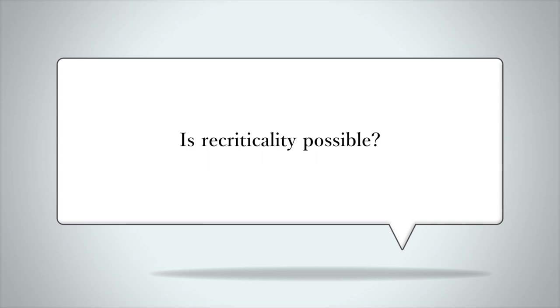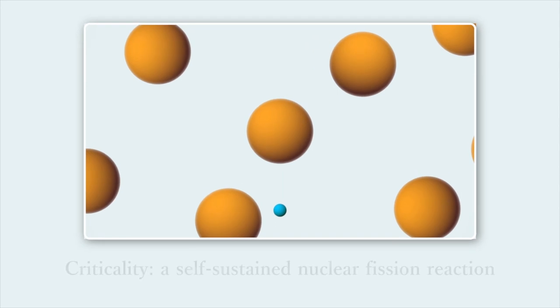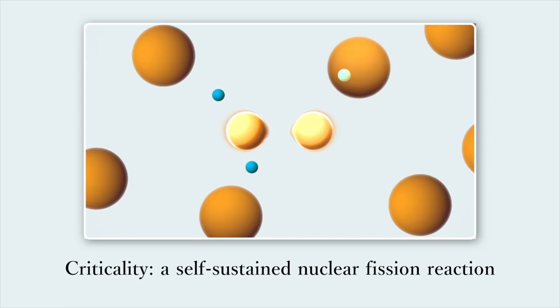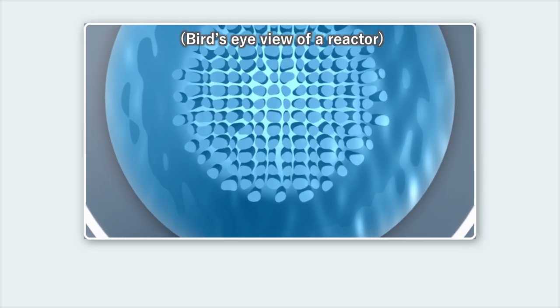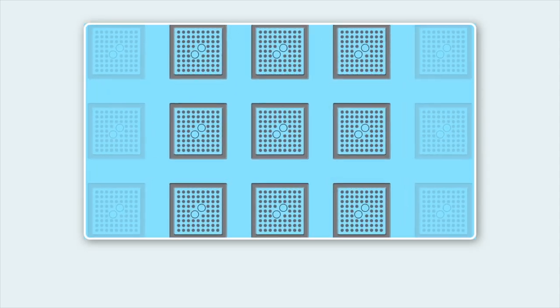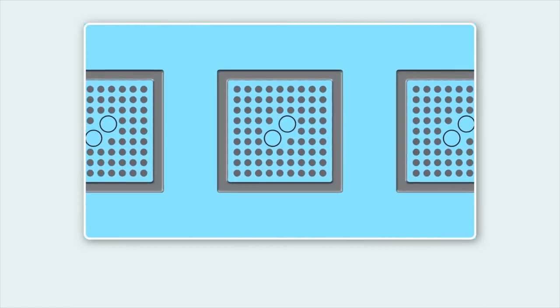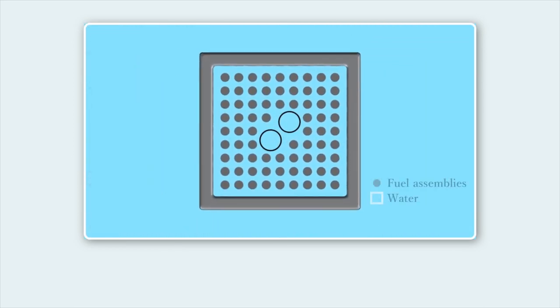Is there any possibility of recriticality occurring from the current fuel debris? First of all, criticality is defined as a condition where a nuclear fission reaction becomes self-sustaining. To cause criticality, special conditions are necessary, such as placing the fuel in a position where criticality is likely to occur and maintaining a suitable amount of water surrounding it. These conditions are not easily achieved. For nuclear power generation, certain stable conditions are created which make criticality likely to occur based on thorough calculations.